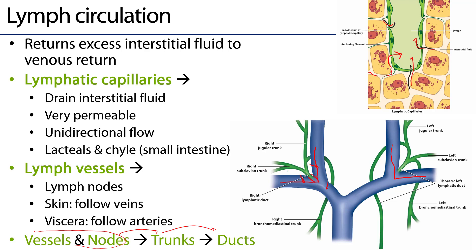Sometimes trunks drain independently into various portions of the venous angle. Conceptually, trunks coalesce into ducts, and these pathways typically follow the vasculature. Superficially, just underneath the skin, lymph vessels follow veins closely, whereas deeper vessels often follow arteries.